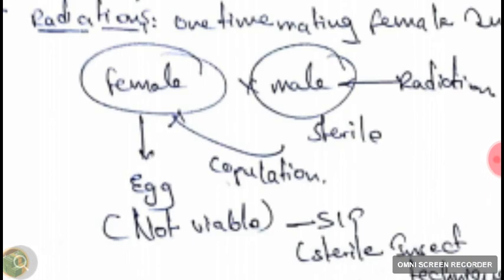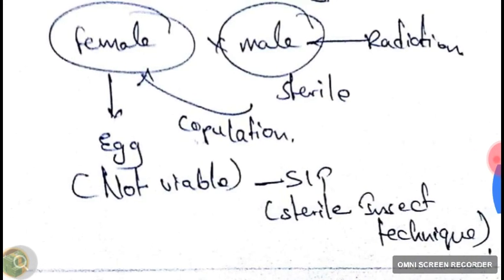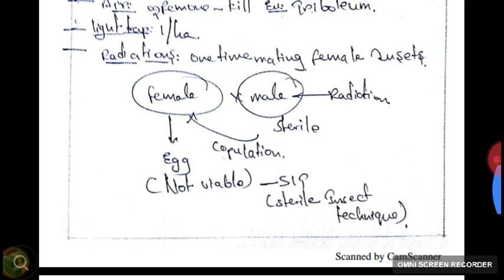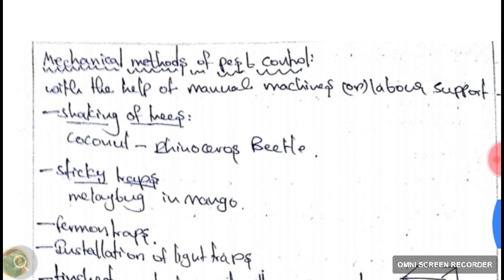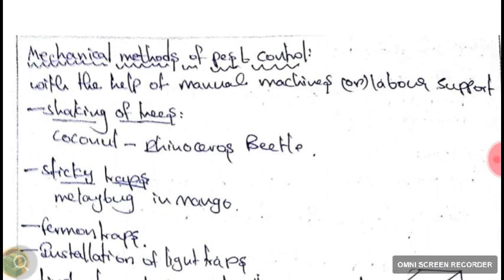I'll draw a diagram for easy understanding. For one-time mating female insects, we take male insects, apply gamma or X-ray radiation, and the male insects become sterile. They mate with females, and the resulting eggs are non-viable. This technique is called the Sterile Insect Technique, or SIT. That is all for the physical method of pest control.